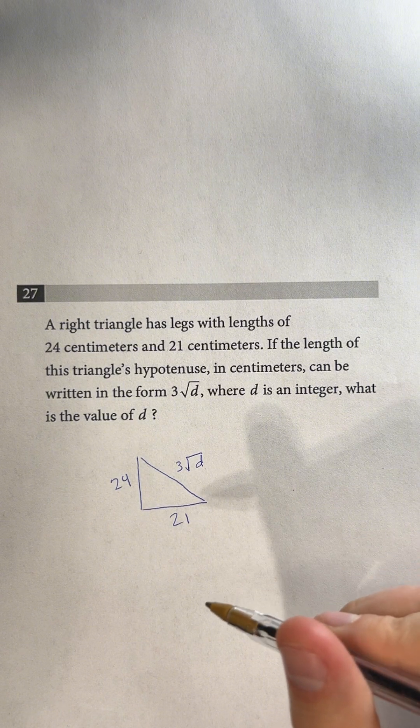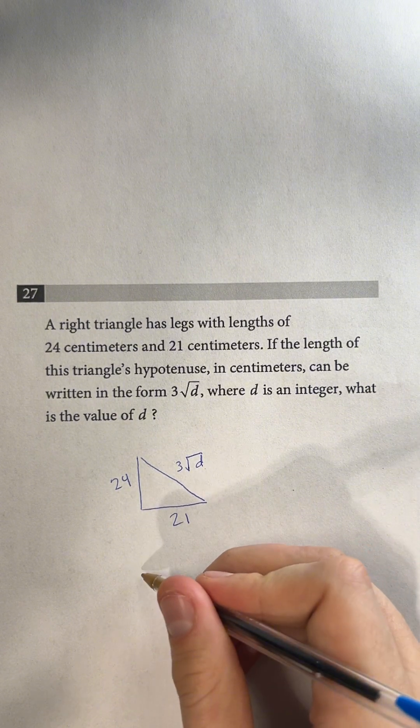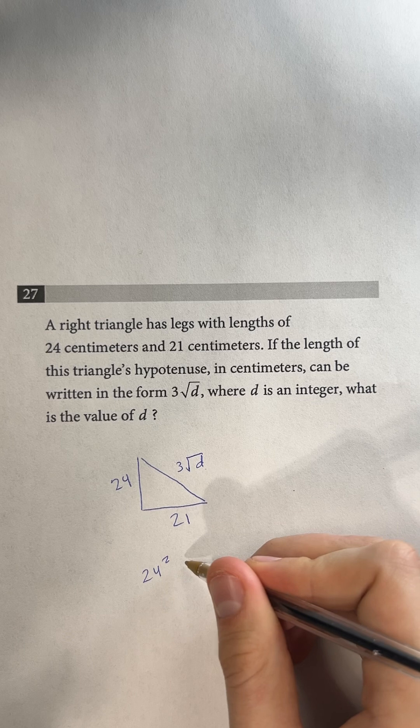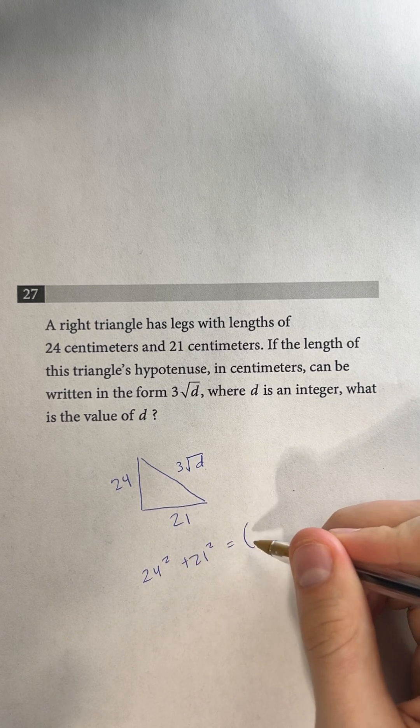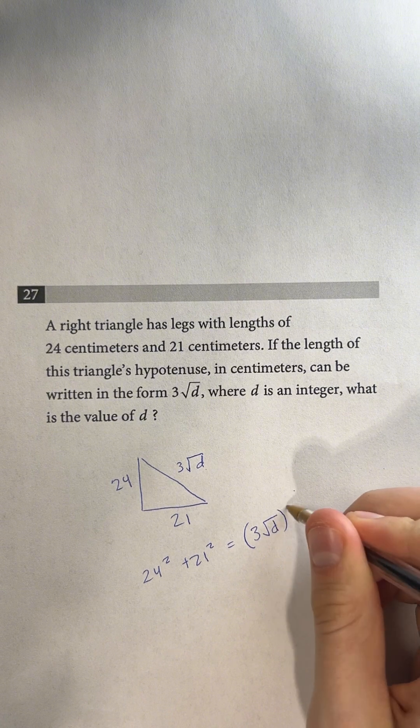Okay, so we can see that we're going to want to use Pythagorean theorem here. So we're going to have 24 squared plus 21 squared equals, well, we'll put it all in parentheses, 3 times root d squared.